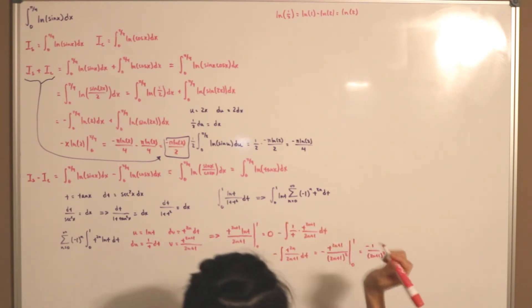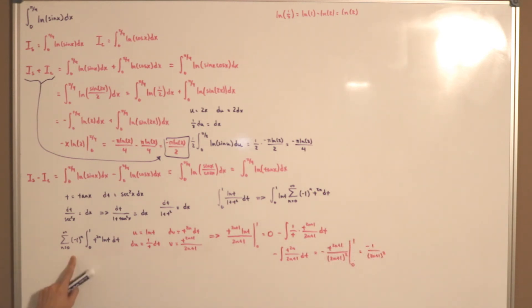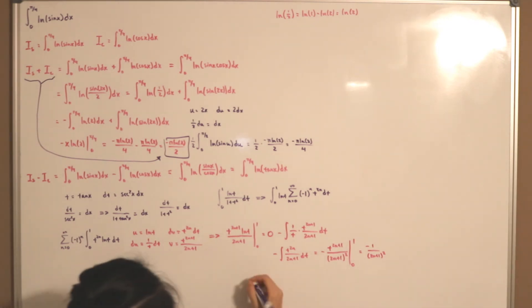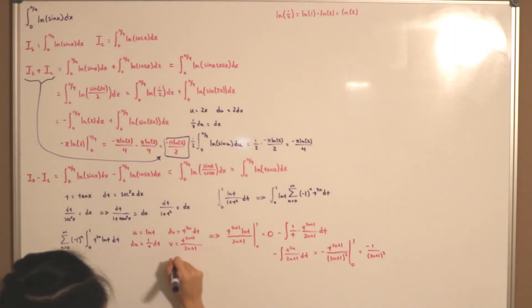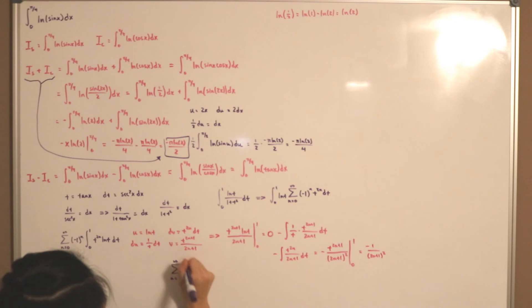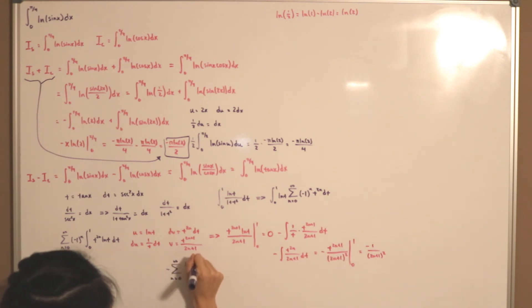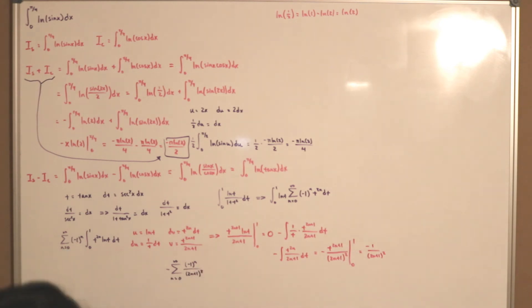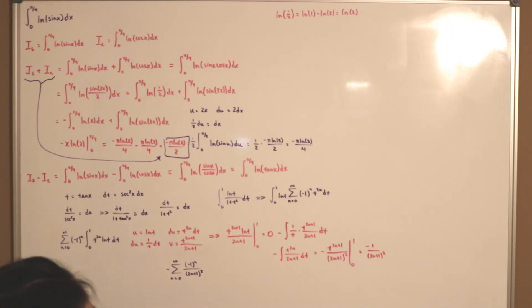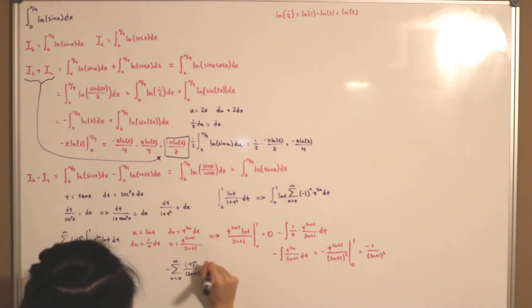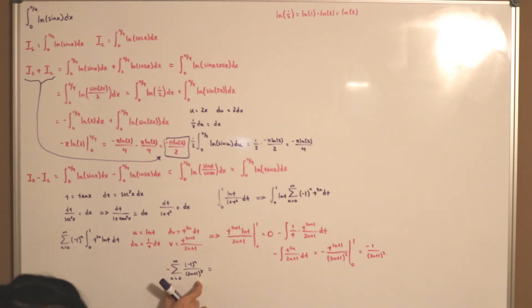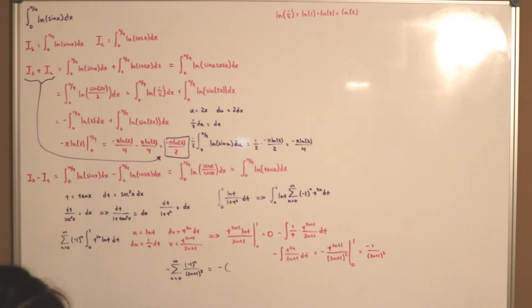Putting it back into our summation, we have: sigma from n = 0 to infinity of (−1)^n · [−1/(2n+1)²] = negative sigma from n = 0 to infinity of (−1)^n / (2n+1)². This is actually the definition of Catalan's constant, which is widely used in combinatorics. Defining this summation as C, we get that I(s) − I(c) = −C.